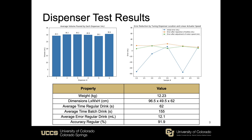Throughout testing, we were also weighing our dispenses to see if we were getting consistent volumes from each nozzle. As you can see, we have about a 92% accuracy rate, with an average error of 12.1 milliliters per dispense.